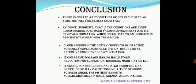In conclusion, there is debate as to whether cloud seeding is working properly in substantially increasing snowfall. Evidence suggests that when conditions are right, cloud seeding can modify cloud development and ice crystal formation, leading to increased rain reaching the ground. It is a costly process requiring large amounts of funding. It can be effective under emergency situations. It is useful in agriculture, but also potentially harmful — silver iodide may cause iodism, a type of iodine poisoning where the patient exhibits symptoms such as runny nose, headache, skin rash, and anemia, among others.